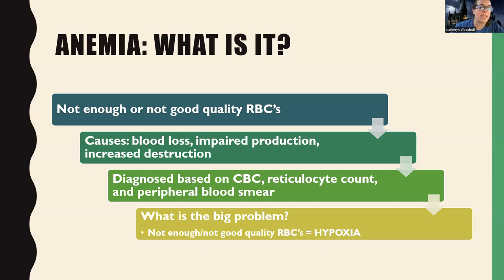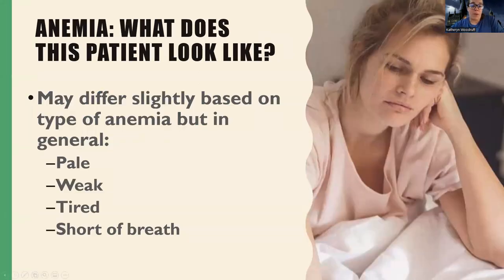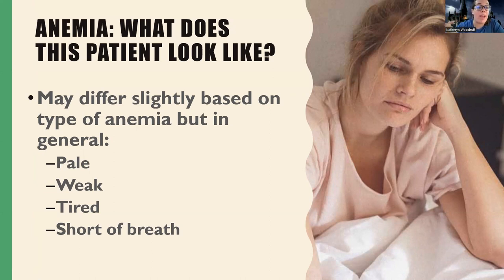The big problem at the end of the day: not enough, not good quality red blood cells leads to hypoxia — lack of tissue oxygenation. So what does a patient with anemia look like? It can differ depending on the type of anemia, but generally when you think anemia, you should think: this patient is pale, they may be weak, they can be tired, and they're short of breath. These are all signs of poor perfusion.